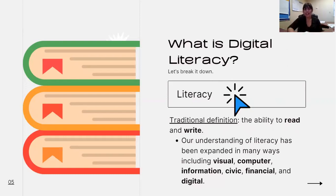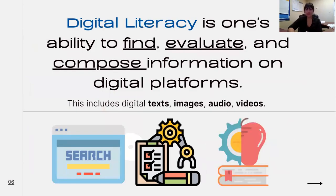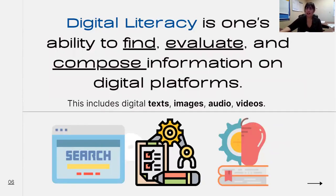So let's combine those two words together to form a definition. Digital literacy is one's ability to find, evaluate, and compose information on digital platforms. This includes everything online — digital texts, online articles, images, audio, video. It's being able to find these and also to evaluate whether or not they are reliable or have validity. Someone in the chat said it's knowing how to learn online — exactly. It's knowing what is true versus what might not be true.